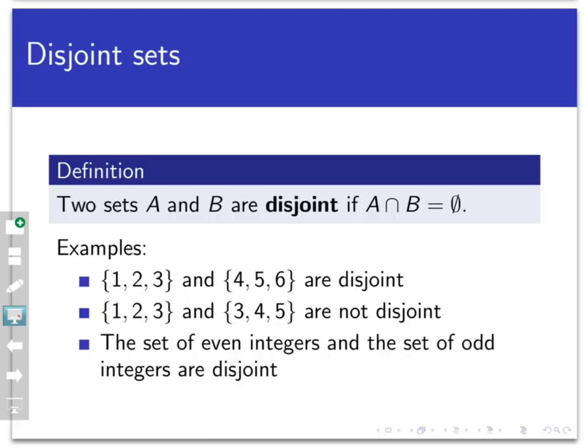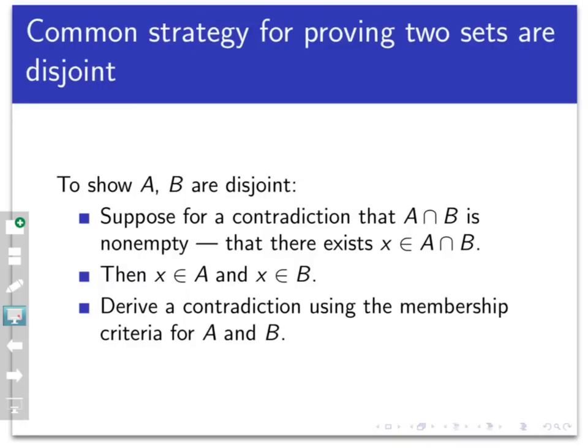So what we're going to talk about here is how to prove that two sets are disjoint. This involves proving that two sets are equal to each other — namely that the intersection is equal to the empty set. I'm going to give you a common strategy, not the only strategy necessarily, but a common strategy for proving two sets are disjoint.